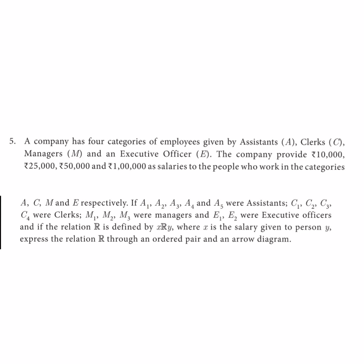X is the salary given to the person Y. Each Assistant — A1, A2, A3, A4, A5 — is given 10,000 rupees salary. The C category — C1, C2, C3, C4 — 4 people, each is 25,000. The Managers, 3 people, each is 50,000 salary. The Executive Officers E1, E2, each is 1 lakh salary.